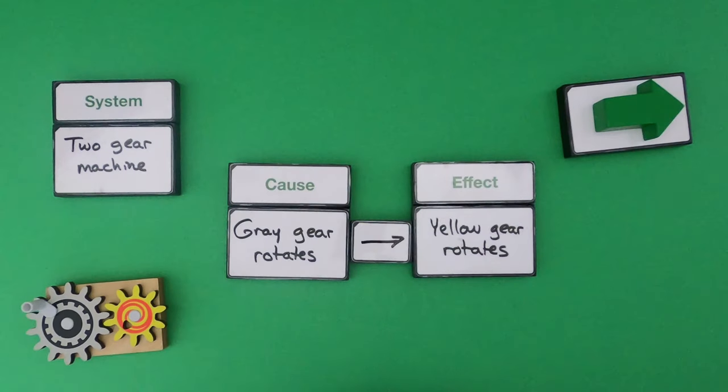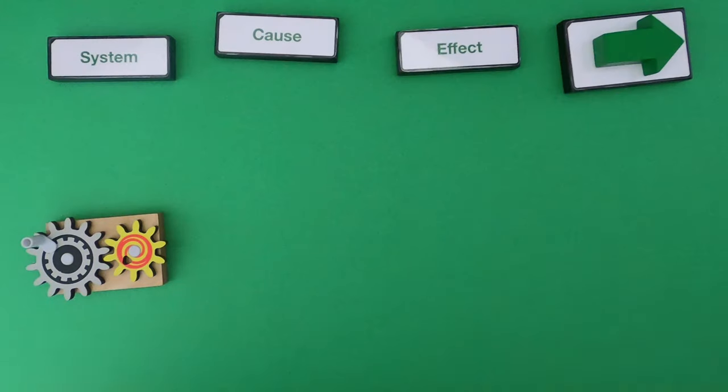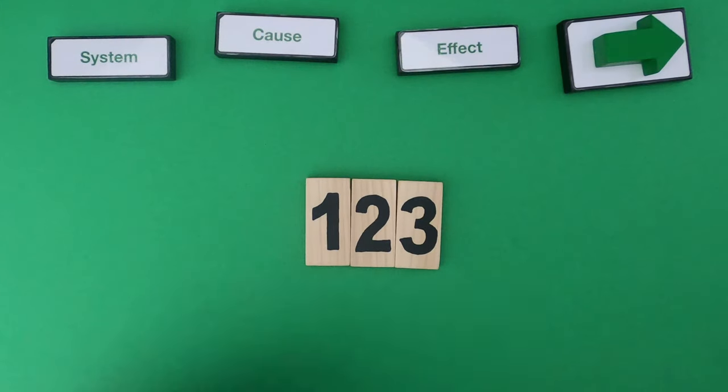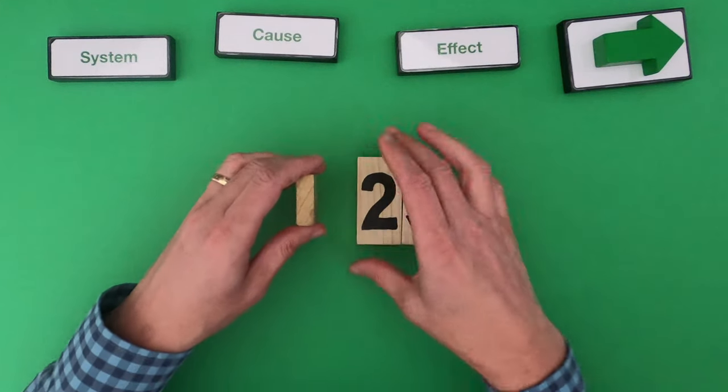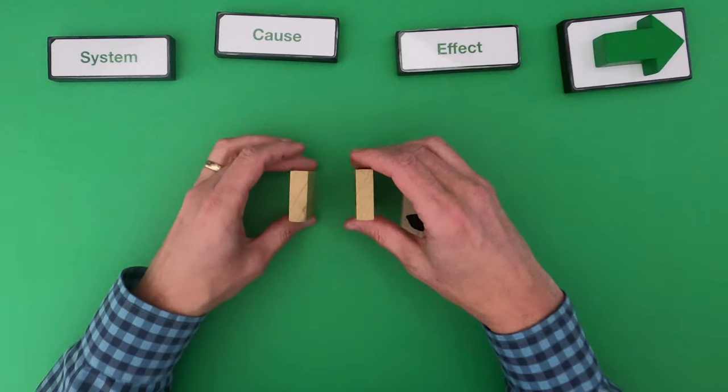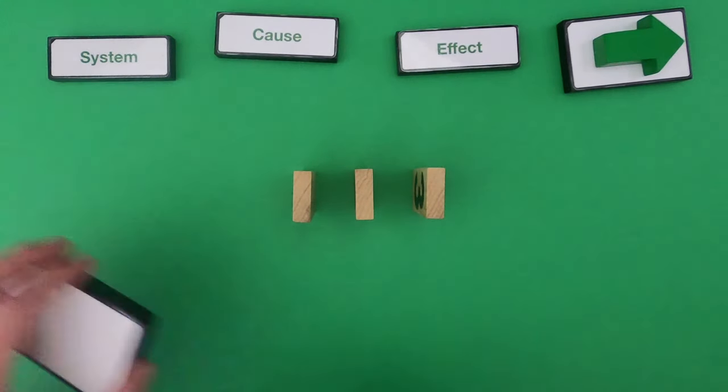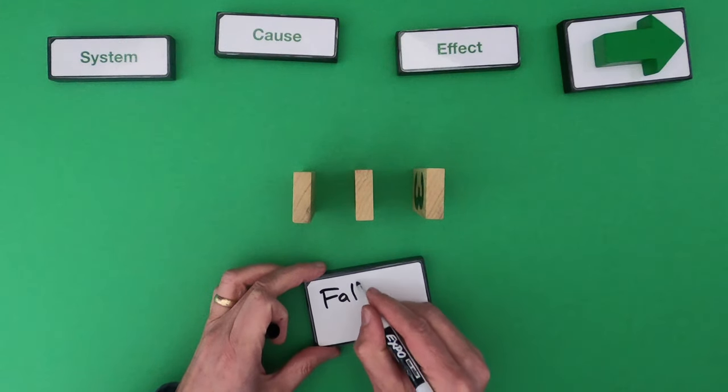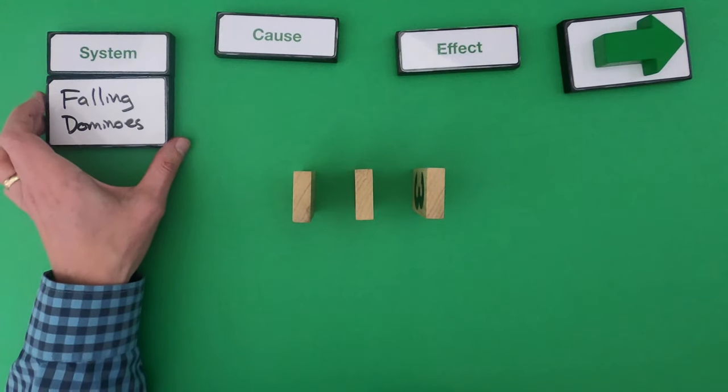So let me get these out of the way and now let me set up a system two that we're going to work on together. What I have here is domino one, domino two, and domino three. And so that's going to be the system. It's important that we define what the system is going to be. And so that's going to be the following dominoes is going to be the system.